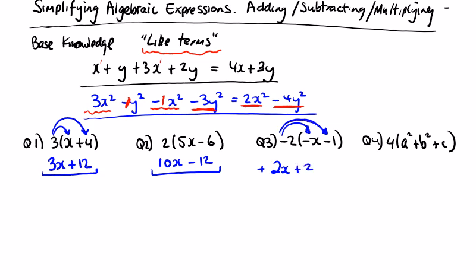This one: 4 by a squared is 4a squared, 4 by b squared is 4b squared, and 4 by c is 4c. Not like terms, we're done. Hopefully you got all four of these correct.